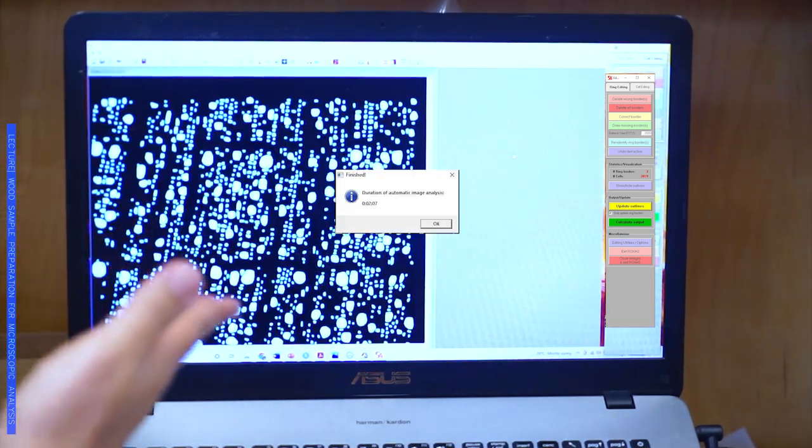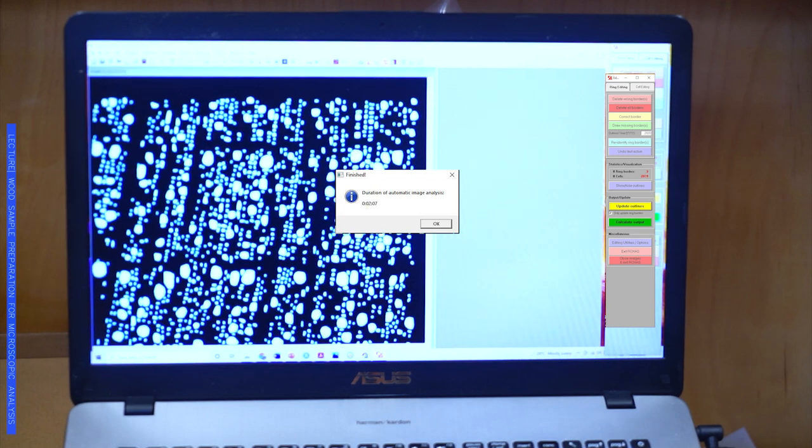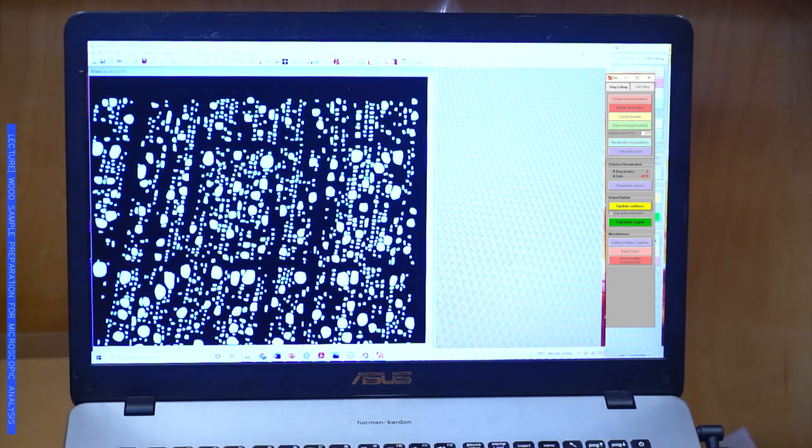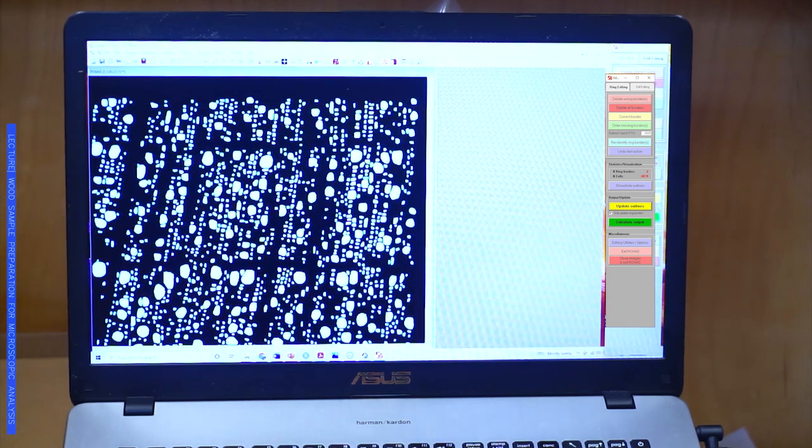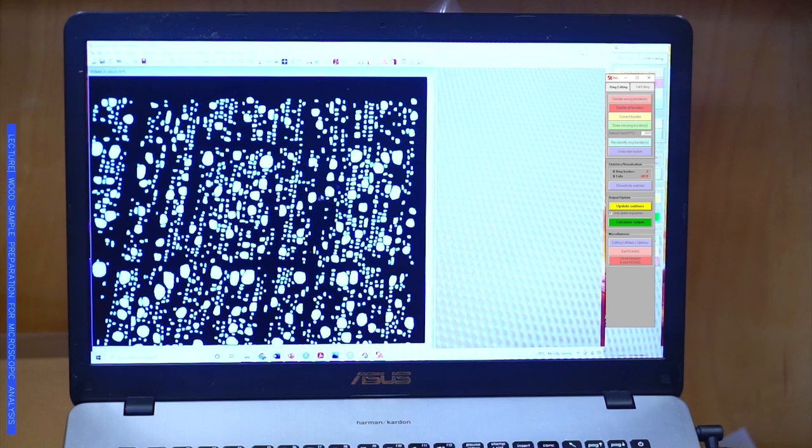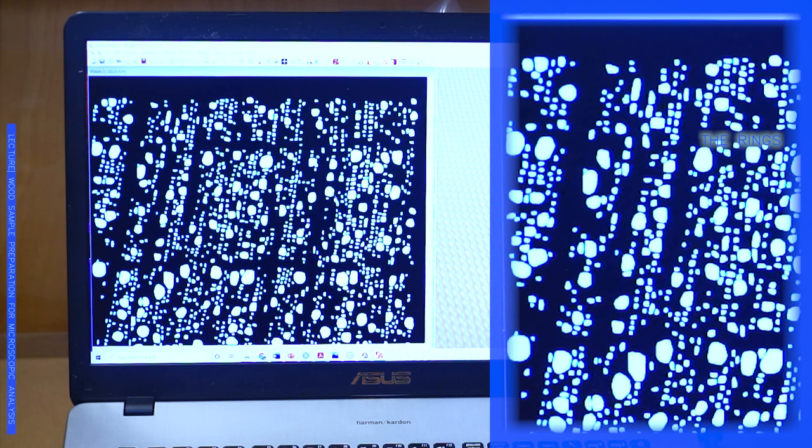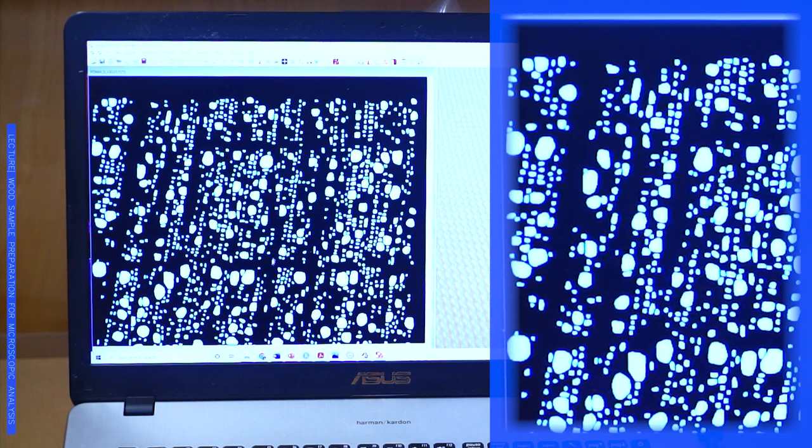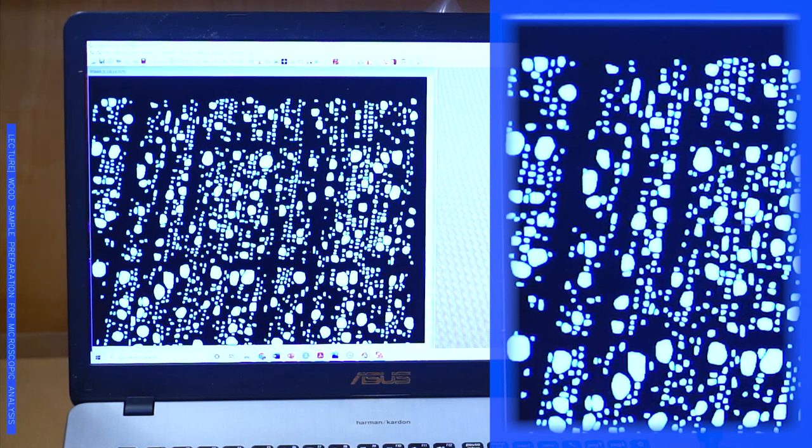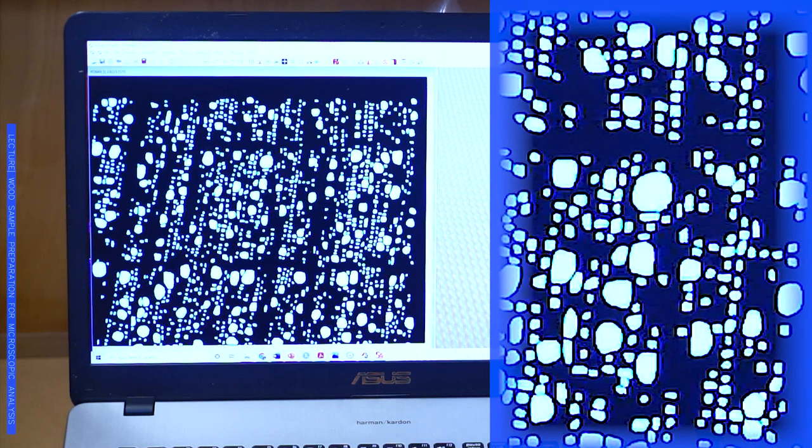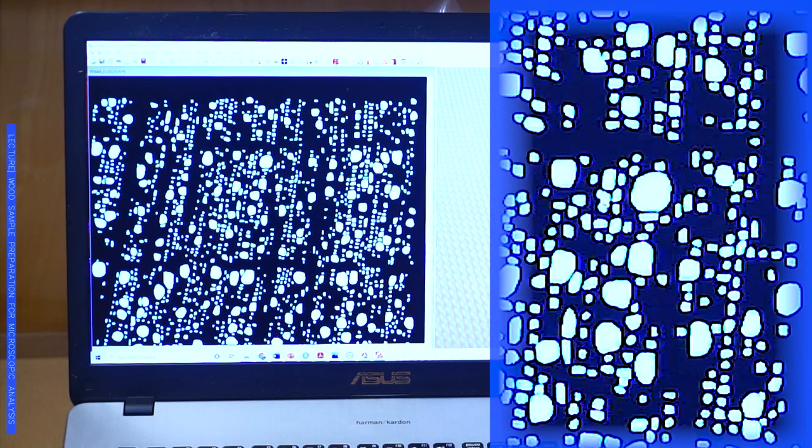In this case, just in two minutes since we started, we were able to get the analysis of the image. Here you can see the cells that the program has captured. If you are able, you will see these dark spots, those are the rings. And also vertically, there are some dark spots, those are the rays, which is an area that we do not want to measure. In this case, we are just measuring the cells that we are interested in, which are mostly the vessels, the biggest ones, and some of the small fibers.